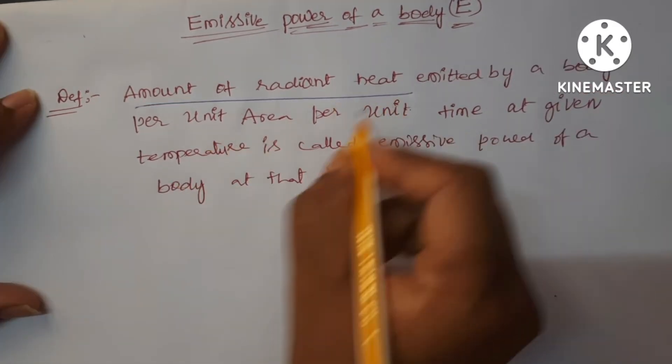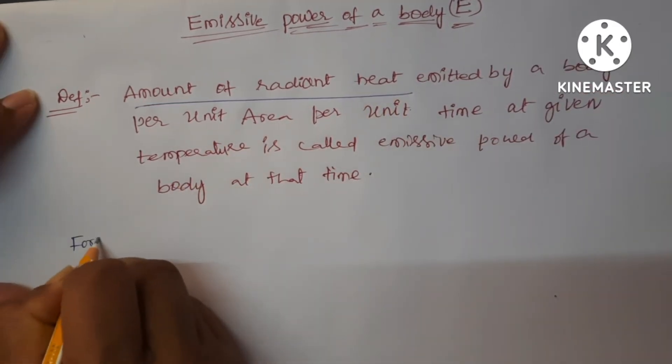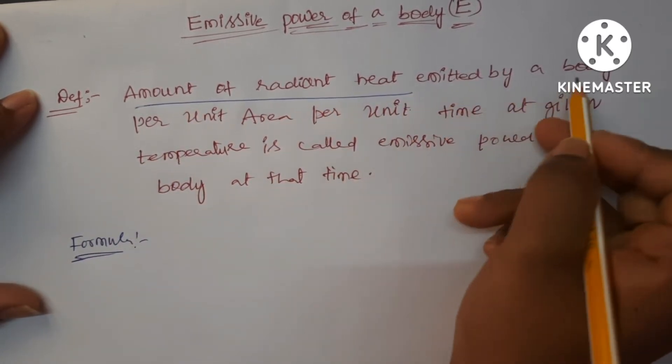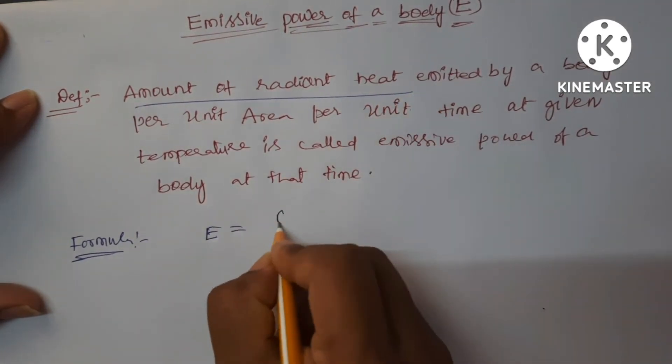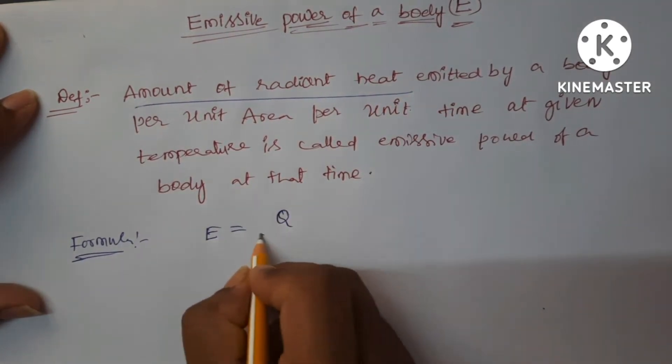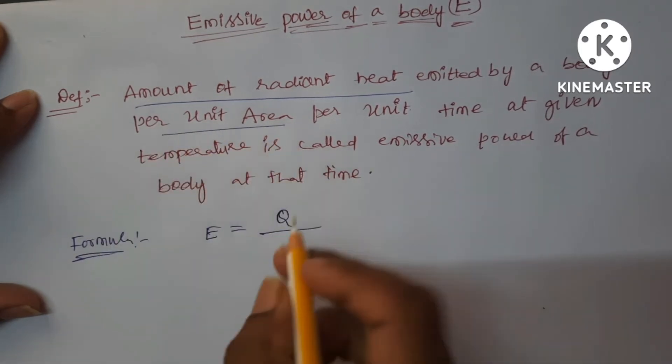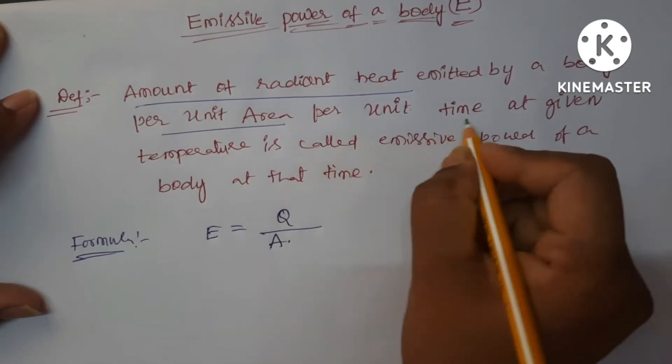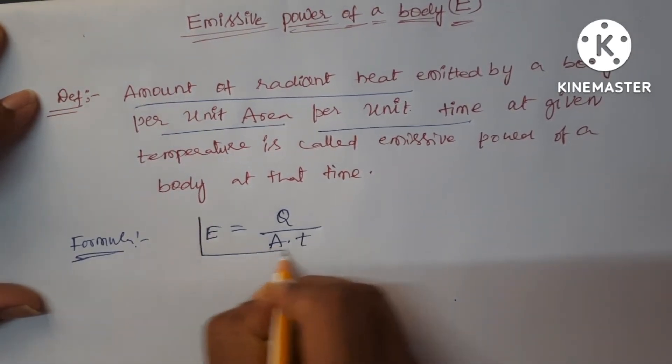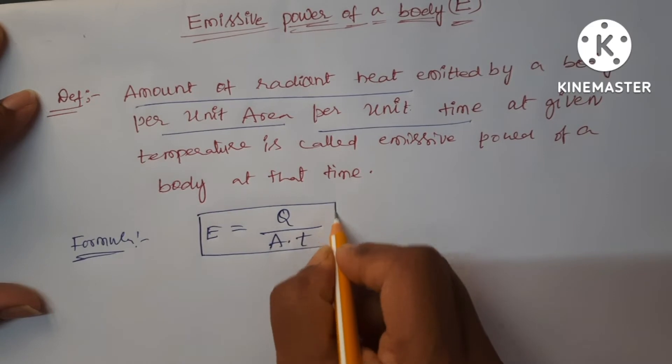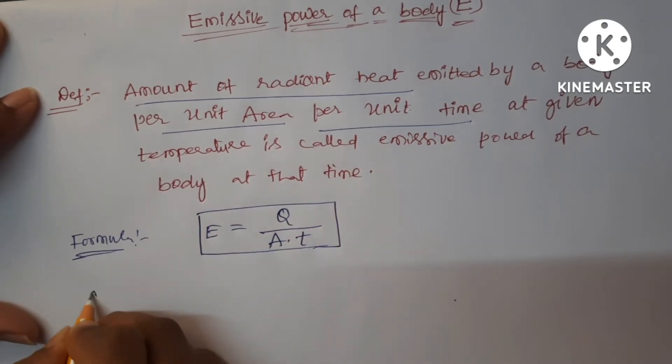See here, emissive power formula is amount of radiant heat emitted by a body. E is equal to Q upon A times T, where heat is denoted with the letter Q, per unit area per unit time. This is the formula of emissive power. Let us see the SI unit.